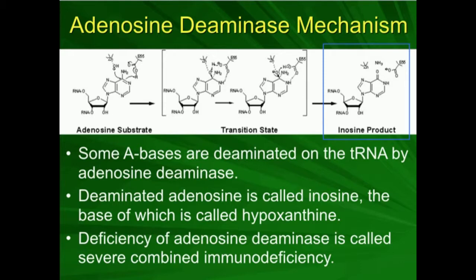It turns out that adenosine deaminase is involved in a very deadly disease when you have a deficiency of it. A deficiency of adenosine deaminase causes severe combined immunodeficiency (SCID). The deficiency of this enzyme causes a lot of problems with immune cells — you tend to not be able to mount immune responses and get very, very sick. But that's a topic for a different video. This is how you can take adenosine as part of the tRNA and deaminate it to make inosine, which is one of our funny bases.